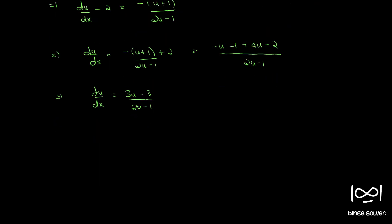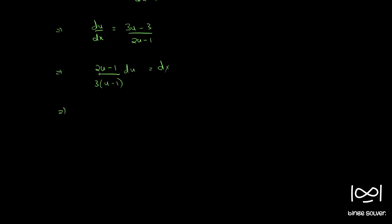Now we bring all the u terms to one side. That gives (2u - 1) divided by 3(u - 1), which we can write as 2(u - 1), that is (2u - 2), plus 1, all divided by 3(u - 1). So du = dx.